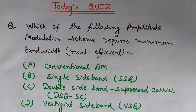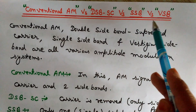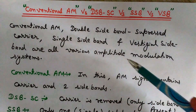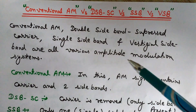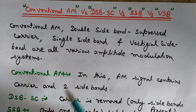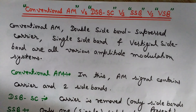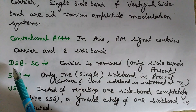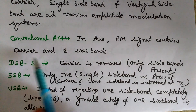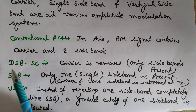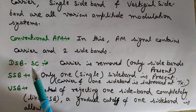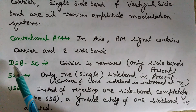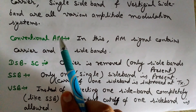Now let's start. All these types are types of amplitude modulation and we will compare them. The first is conventional AM — in this amplitude modulated signal we have a carrier wave and two sidebands. The second is DSB-SC, double sideband suppressed carrier — as the name suggests, the carrier is suppressed and not present while transmitting, so only the two sidebands are present.